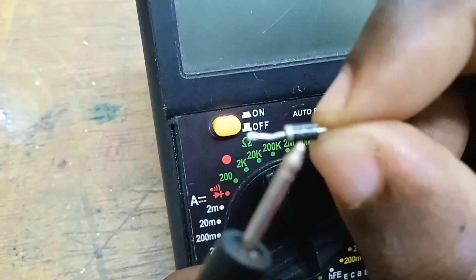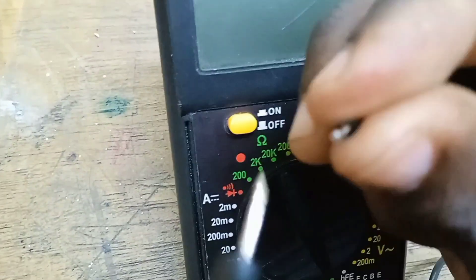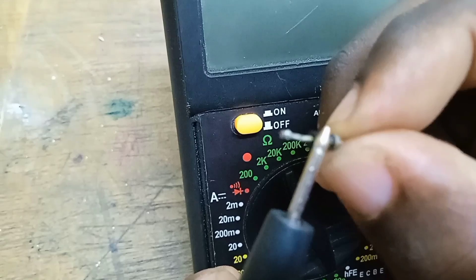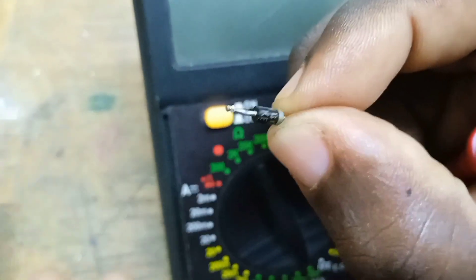This gray strip marks the cathode, which is the negative terminal of the diode, while this black strip marks the anode, the positive terminal of the diode.